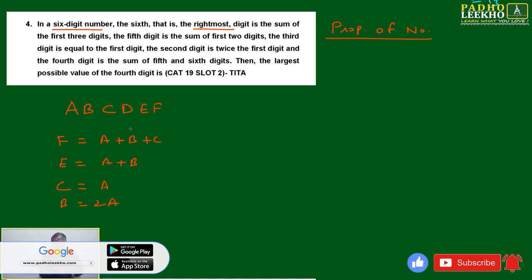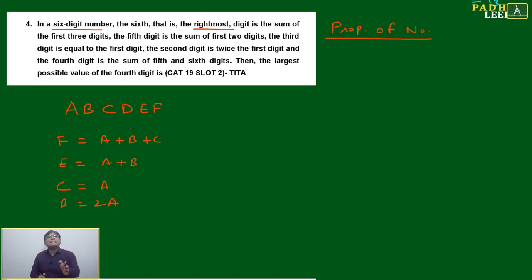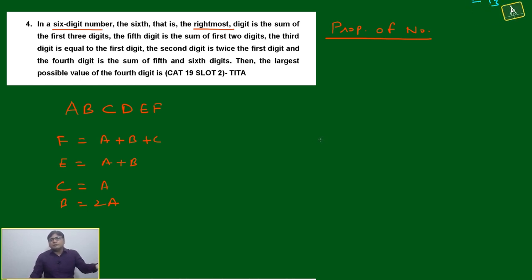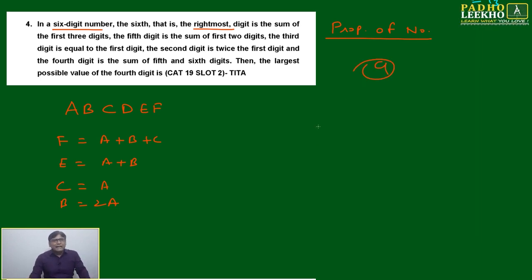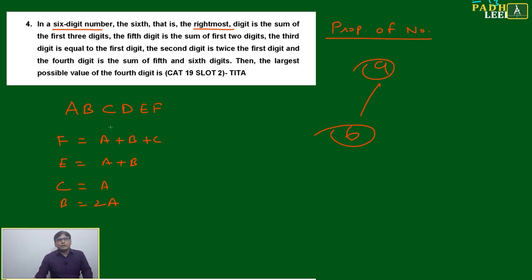Single-digit numbers have certain limitations — they can't go beyond nine. Two-digit numbers span 10 to 99 (90 numbers); three-digit numbers have 900; four-digit have 9000. But single-digit numbers can only be written in nine ways. We have taken six numbers — what are the possibilities? Only one or more than one possibility exists for the value of a.